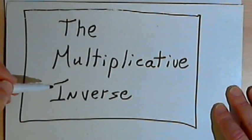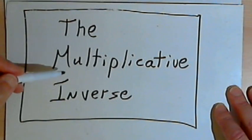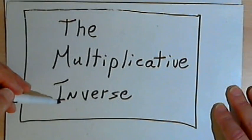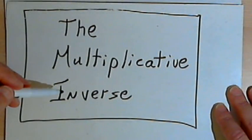Now like a lot of things in math, the term we use here, multiplicative inverse, makes this sound a lot harder than it is. It's really pretty simple. So let's get started.